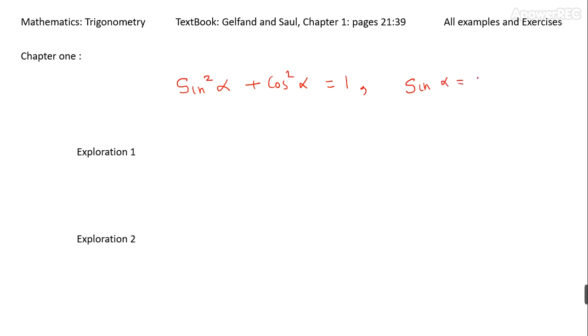Sine alpha is related to cosine of 90 minus alpha. Very simple one-line proof but very interesting relationship.